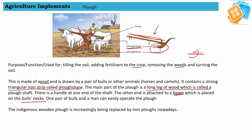There are two ends on the plow shaft. The pair of bulls and a man can easily operate the plow. The indigenous wooden plow is increasingly being replaced by iron plows nowadays, as modern techniques are coming into agriculture and ancient tools are being replaced by modern ones.